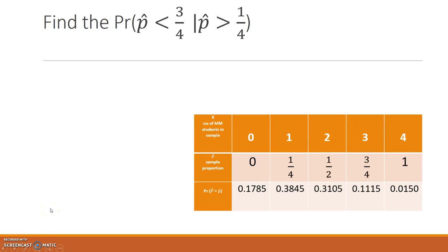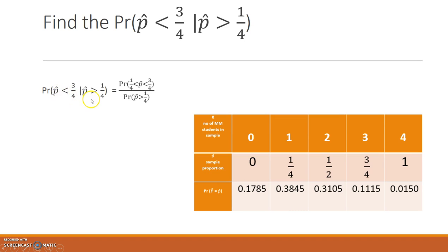Now let's find the probability that P-hat is less than 3/4, given that P-hat is greater than 1/4. Using the conditional probability formula, this equals the probability of the intersection — where P-hat is both less than 3/4 and greater than 1/4 — divided by the probability that P-hat is greater than 1/4.